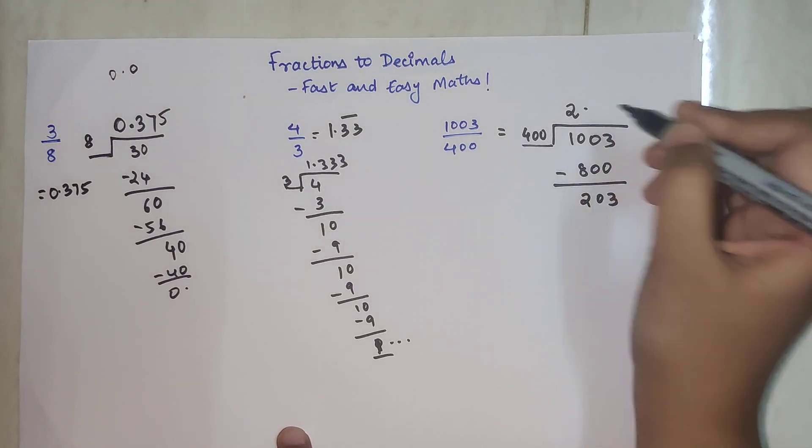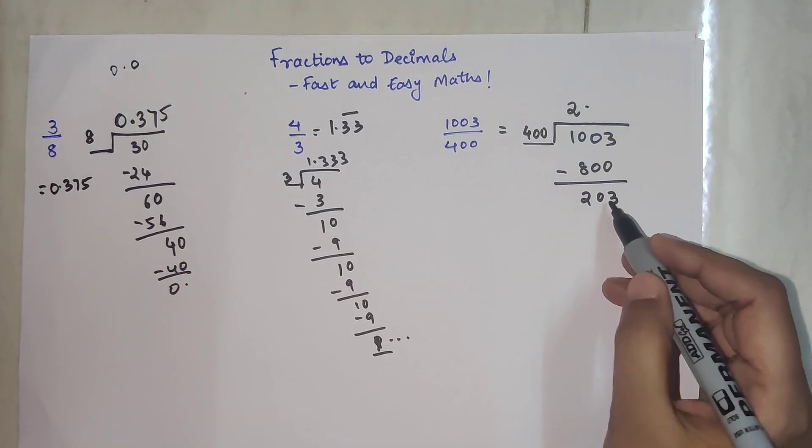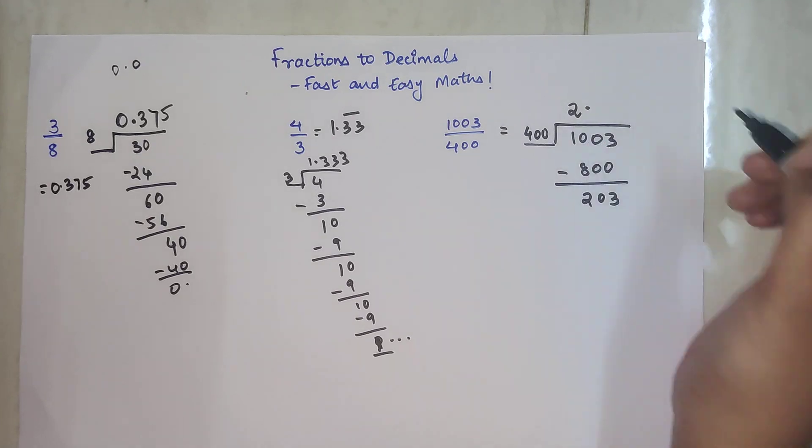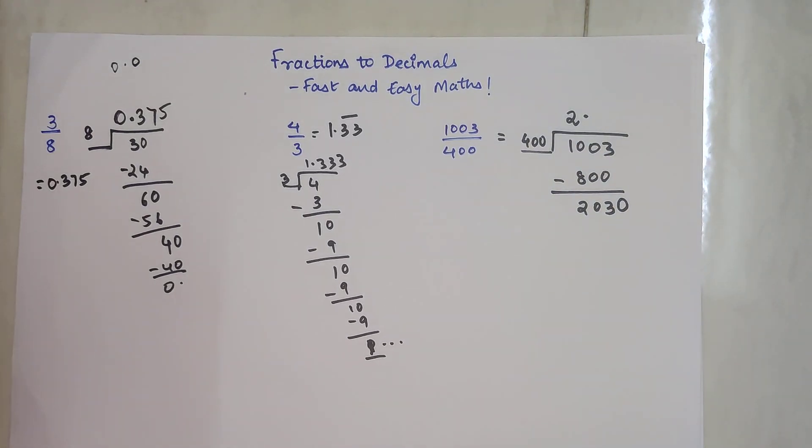Now we take a point. Why point? Because 203 is less than 400. The moment I take a point, I'm getting the liberty of adding 1 0 over here. So now the number coming over here is 2030.